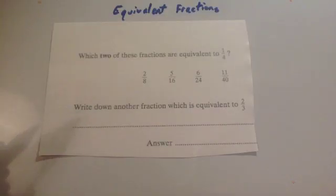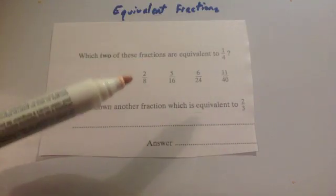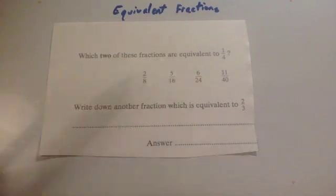Okay, and here's another exam question. We've got which two of these fractions are equivalent to a quarter. And the options are 2 eighths, 5 sixteenths, 6 twenty-fourths, and 11 fortieths. So first of all, let's look at the 2 eighths.